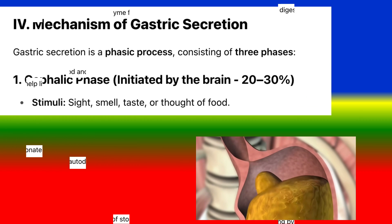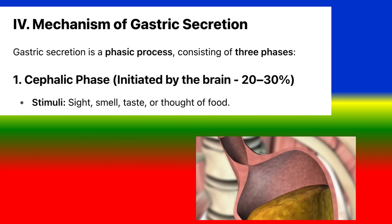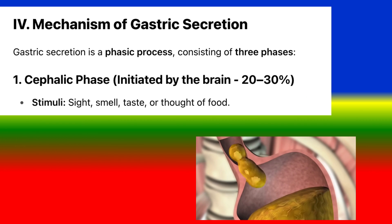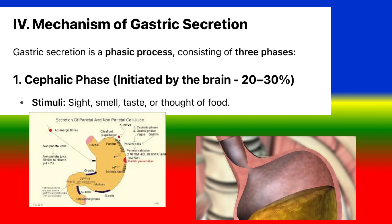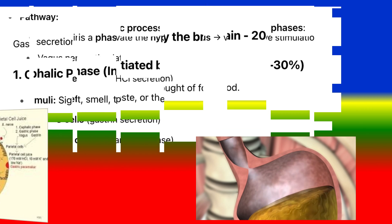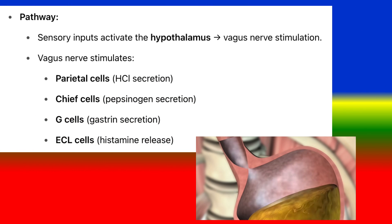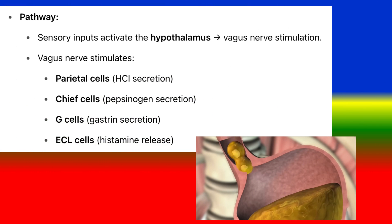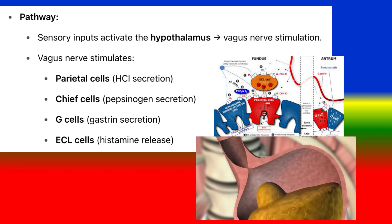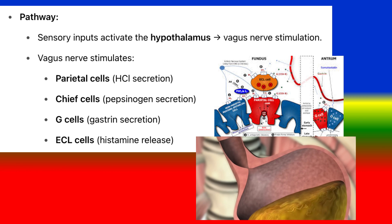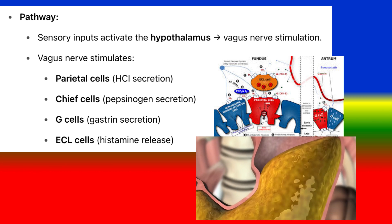Mechanism of gastric secretion: Gastric secretion is a phasic process consisting of three phases. 1. Cephalic phase — initiated by the brain, accounts for 20–30% of secretion. Stimuli include sight, smell, taste, or thought of food. Pathway: sensory inputs activate the hypothalamus; vagus nerve stimulation stimulates parietal cells to secrete HCL, chief cells to secrete pepsinogen, G cells to secrete gastrin, and ECL cells to release histamine.